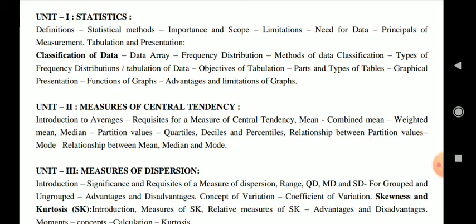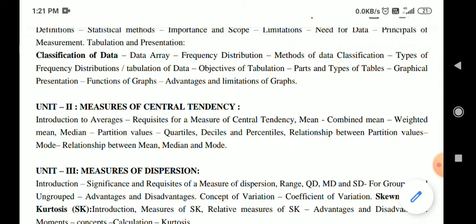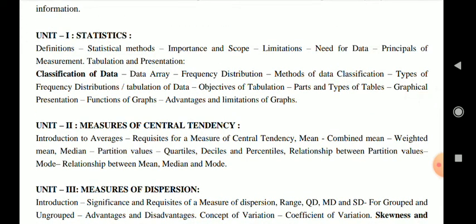This subject consists of five different units. Unit One is mainly theoretical in nature. It covers basic definitions, statistical methods, importance and scope, limitations of statistics, need for data, principles of measurement, tabulation and presentation. Along with that, we also cover classification of data, which includes data array, frequency distribution, methods of data classification, types of frequency distributions, tabulation of data, objectives of tabulations, parts and types of tables, and graphical presentation.